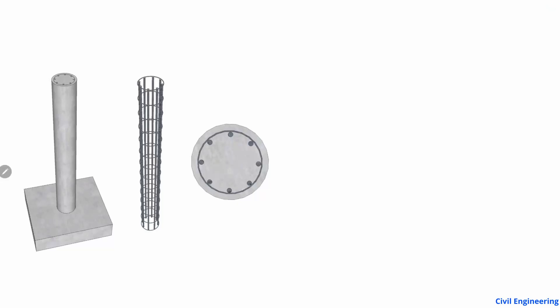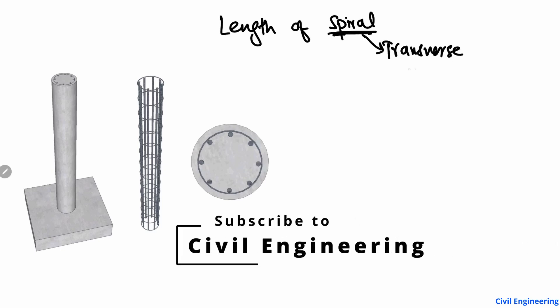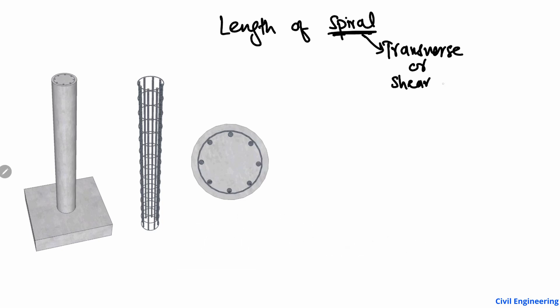Hello guys, welcome back to E7 Engineering YouTube channel. Please subscribe to our channel for daily E7 engineering videos. Today's lecture I'm going to show how we can find the length of the spiral reinforcement — the transverse or shear reinforcement in the case of the column. In columns and beams, these are mostly known as stirrups, instead of spirals. So what is a spiral and how can we find the length of the spiral?